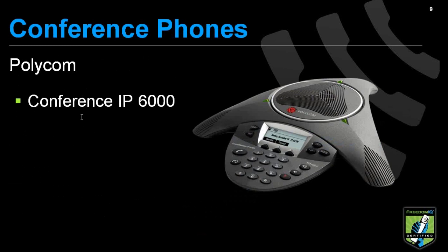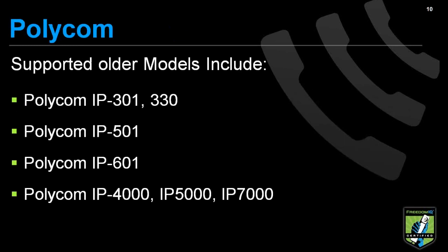We offer a conference phone, which is the Conference IP 6000 — a very good conference phone. There are also some older models that are supported: the sister products to the models we just covered, like the 301, the 501, and the 601, can be used with our service. We do have firmware that supports those, so in the event that someone has an older phone, that will work.